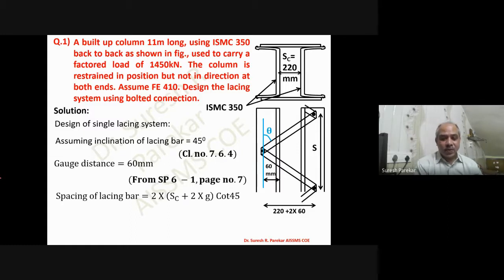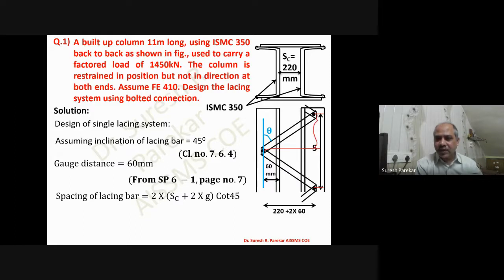The spacing of lacing bars is the distance between the two bolts — the length of the individual member between the two bolt points. This is calculated as S_c + 2G, because the lacing spans across the channel spacing plus one gauge distance on each side. With theta = 45 degrees, the spacing of lacing bar is 2 times (S_c + 2G), and we get a value of 680 mm.